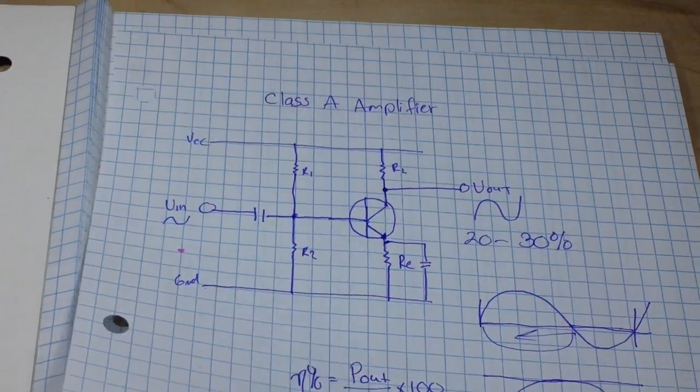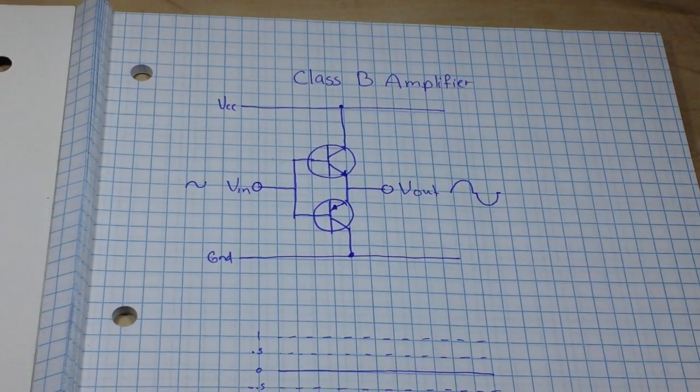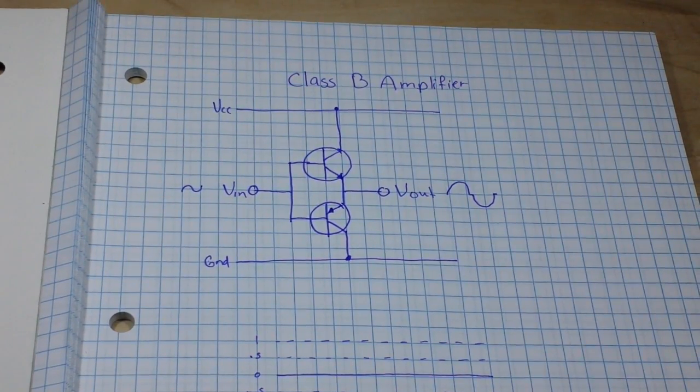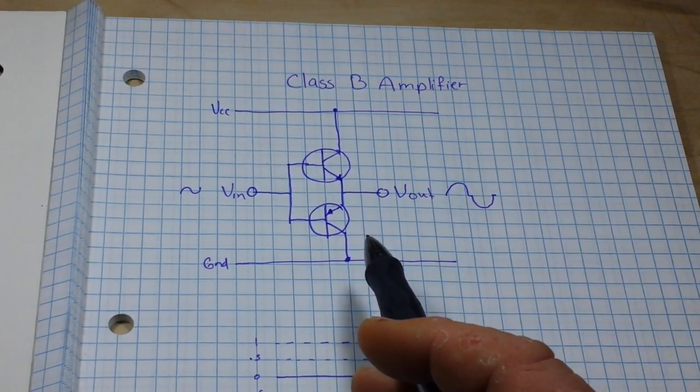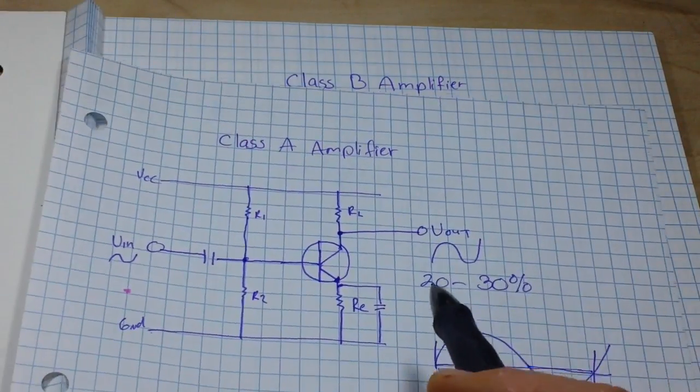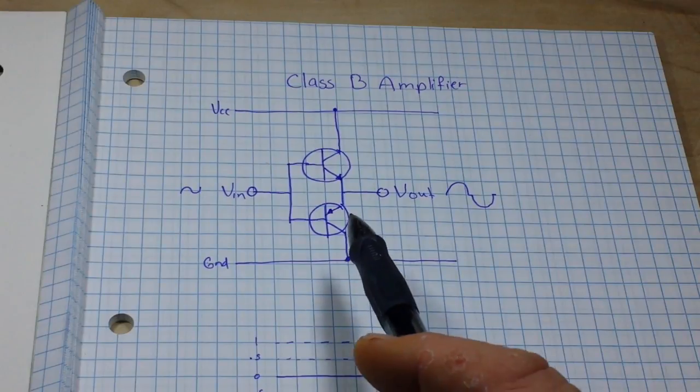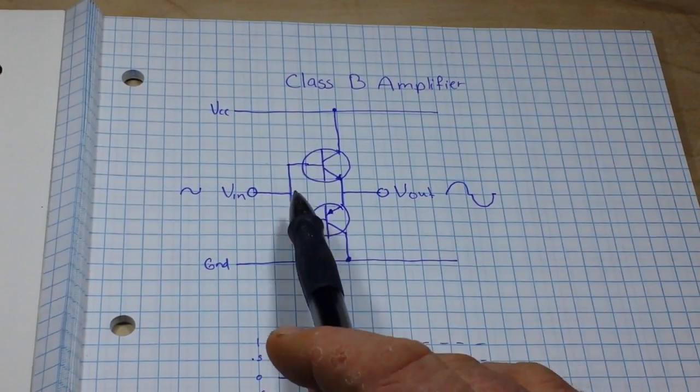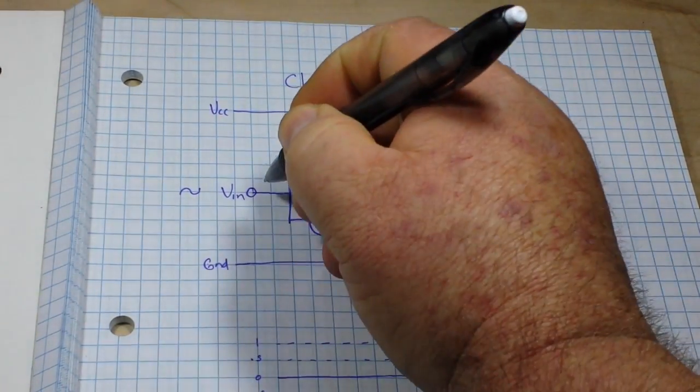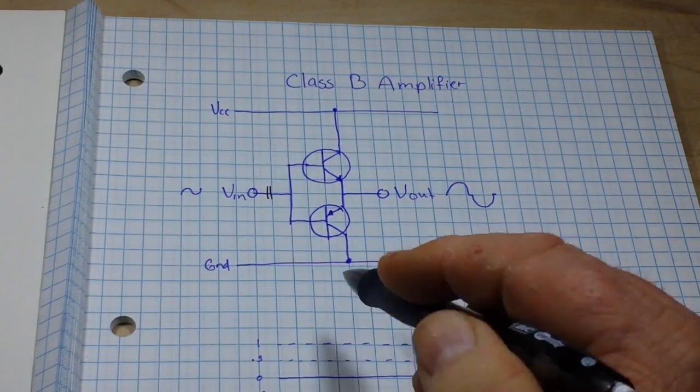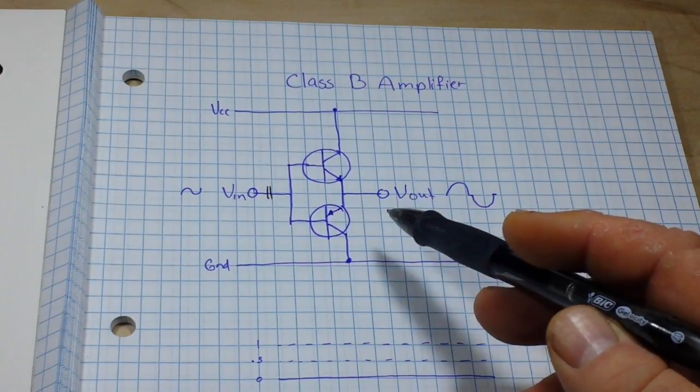One of the ways that we can make it more efficient is to use what's called a Class B amplifier, and that's what we're going to talk about today. The Class B amplifier is actually a lot simpler than the Class A. You see the Class A here, we have all this going on.